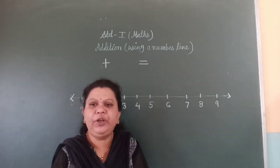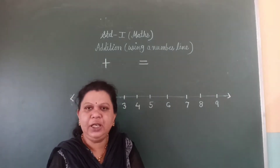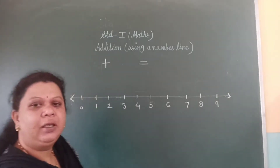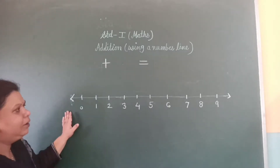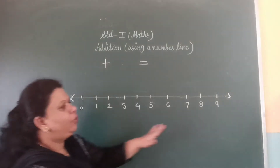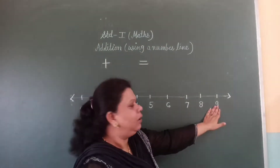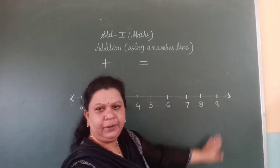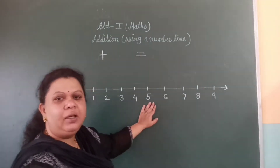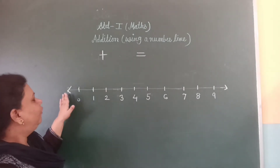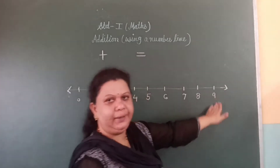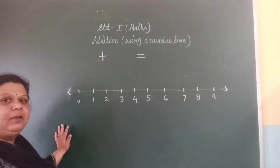Now we are going to learn addition using a number line. A number line is drawn on a blackboard, and 0 to 9 numbers are written on it.